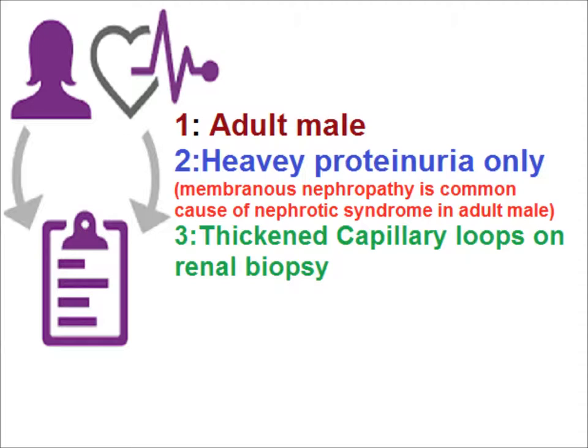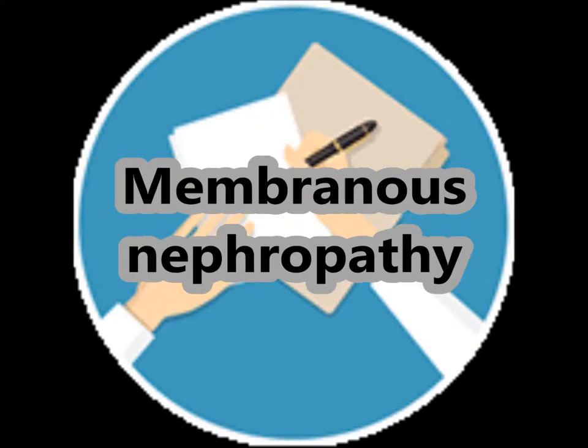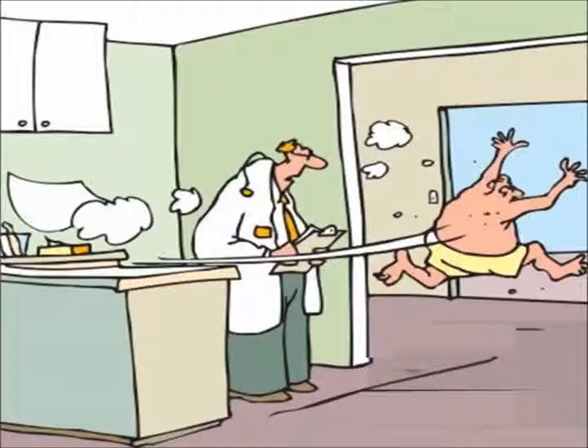So, in this adult male with heavy proteinuria only and thickened capillary loops on renal biopsy, the 4+ protein falls in the nephrotic range. We can conclude our diagnosis as membranous nephropathy.